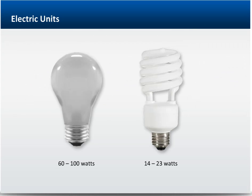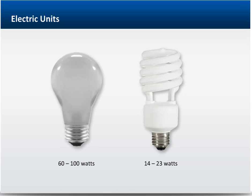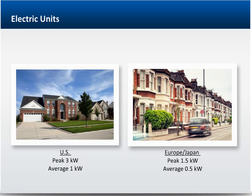Let's look at a few examples to give you a sense of what these units mean. An older incandescent light bulb typically has a demand of 60 or 100 watts, while a newer equivalent compact fluorescent bulb has a demand of 14 to 23 watts. An average suburban home in the U.S. has a peak demand of approximately 3 kilowatts and an average demand of about 1 kilowatt.